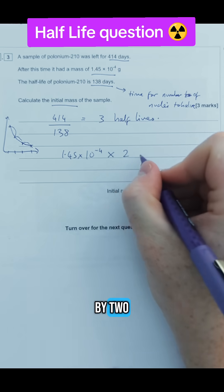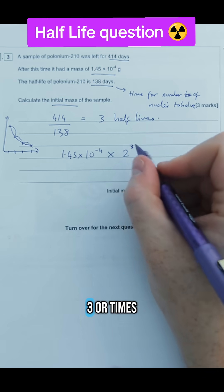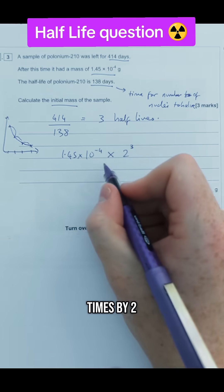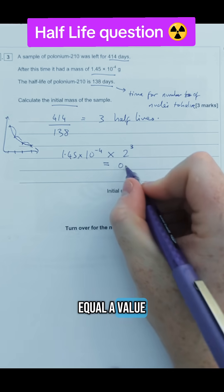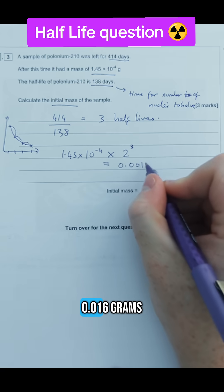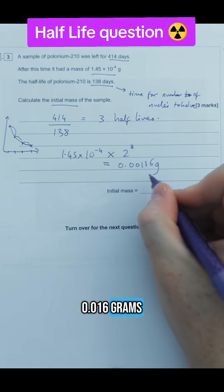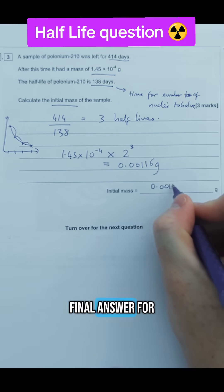So the final sample mass was this value here. We times by two and then you can either do to the power of three or times by two times by two times by two, and that in this case would equal, if you put in your calculator, 0.00116 grams which is our final answer for this question.